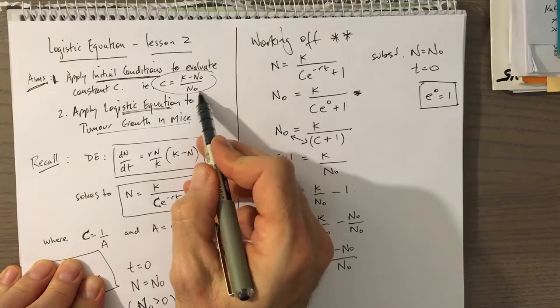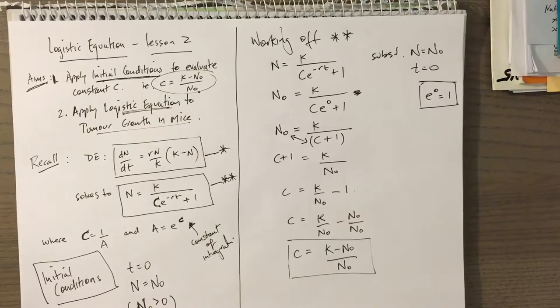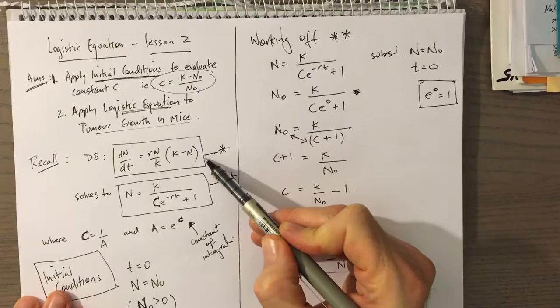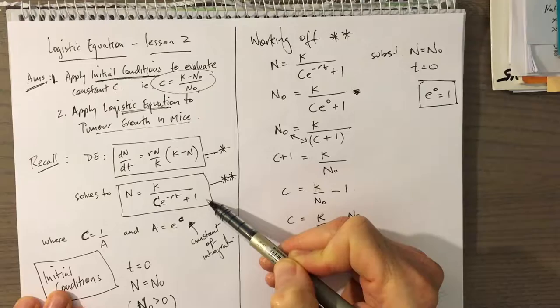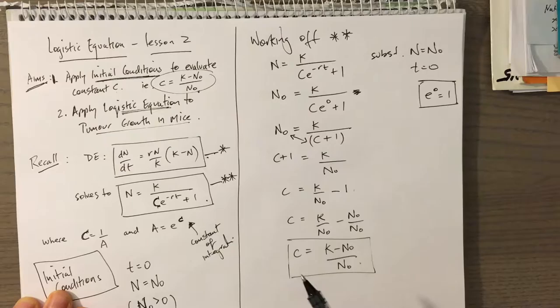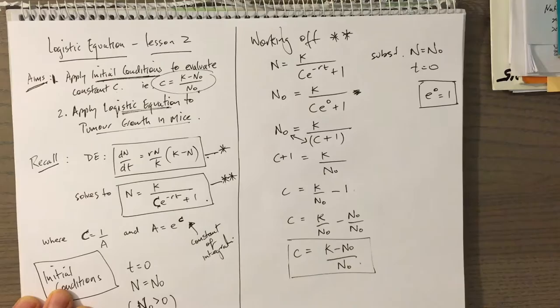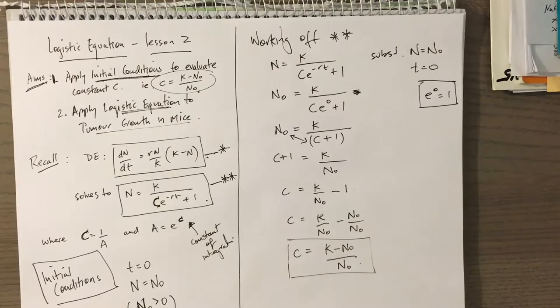This is basically the thing we had to find. If you look at Assignment Task 2, Question 5, it says: show that the solution to this differential equation is equal to this, where the constant C equals (K − N₀)/N₀. The only difference is that in the task sheet the population variable is P rather than N. So we've got our statement for C.